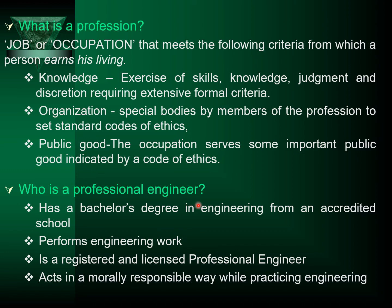Who is a professional engineer? A professional engineer is one who has a bachelor's degree in engineering from an accredited college, performs engineering work, is a registered and licensed professional engineer, and acts in a morally responsible way while practicing engineering. This last point is very important — as engineers, we should act in a morally responsible way while practicing engineering.